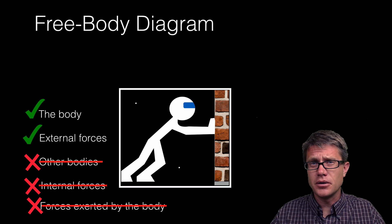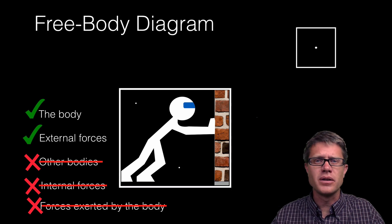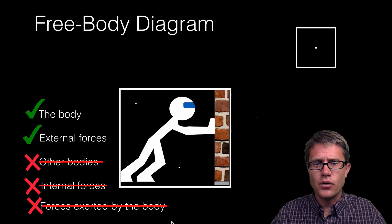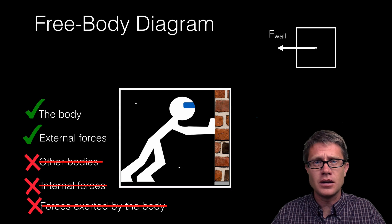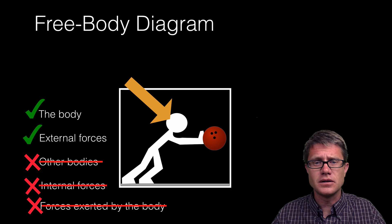If we put this scenario in space, we have the body again but there is no gravity and therefore no normal force. We are applying a force into the wall and it is applying a force back on us — that is your free body diagram. The net force is to the left, and so the acceleration is to the left as well.